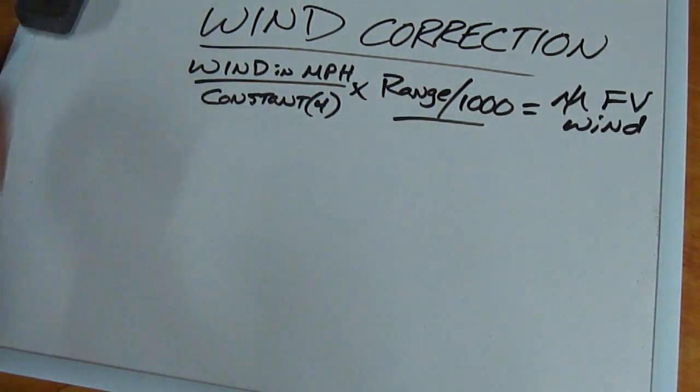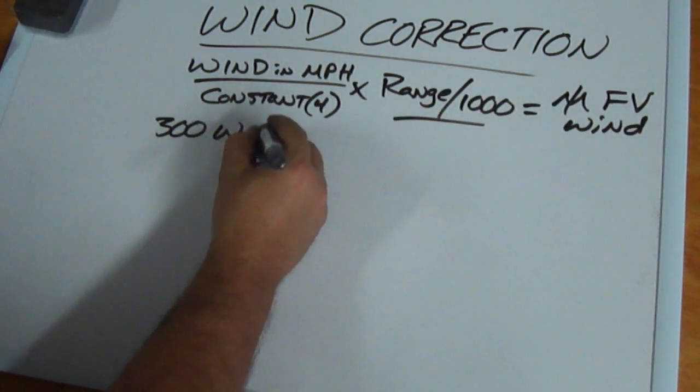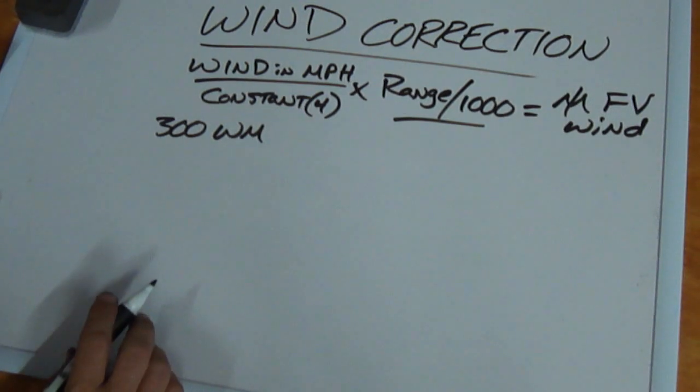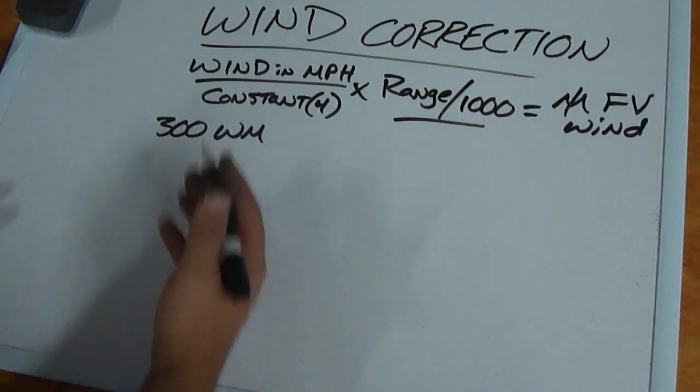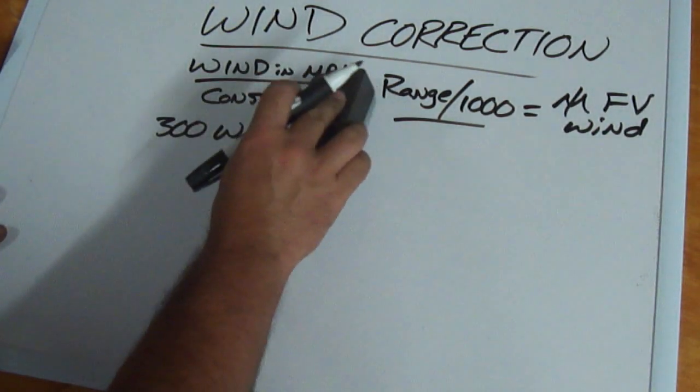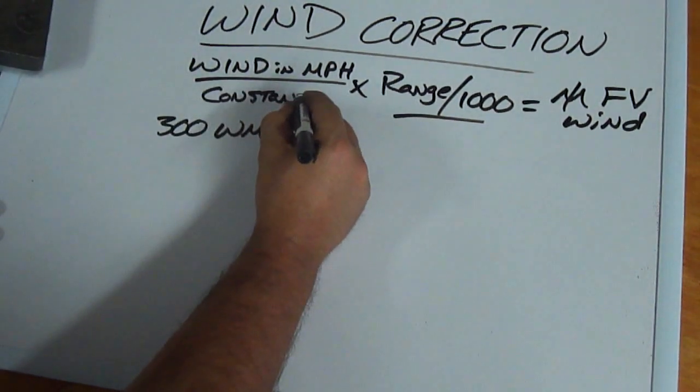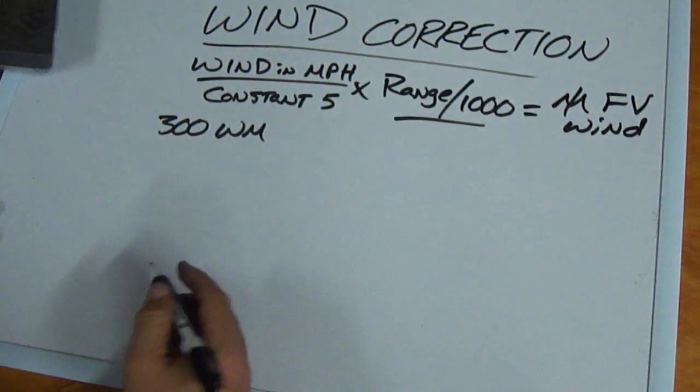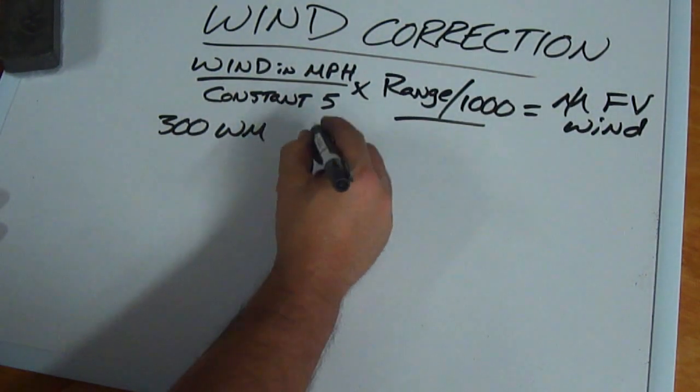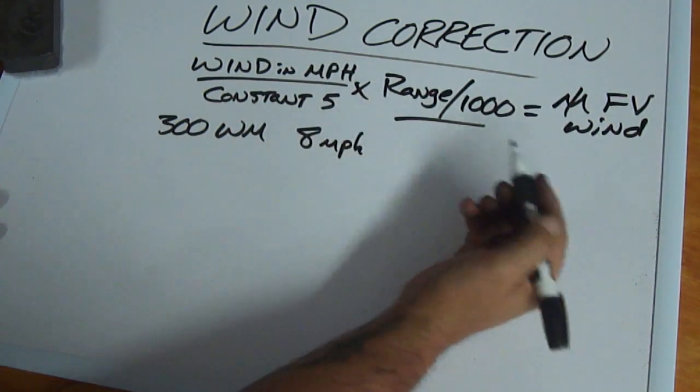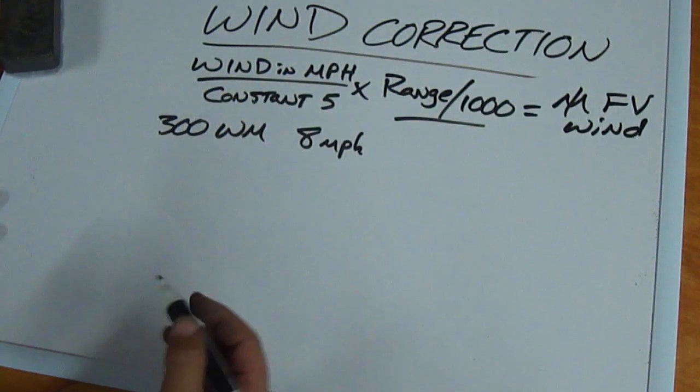If we're using a 300 wind mag, we've got a little more velocity, a little higher BC on the bullet, so it takes more wind to have the same effect. That's why our constant increases. So in this case we're going to be using a constant of five. We'll say we've got an eight mile an hour wind still, and we're still doing full value. Our range is going to be 900 yards.